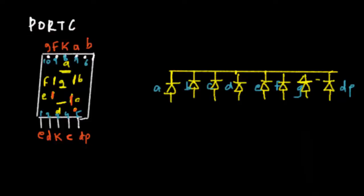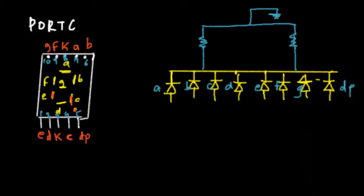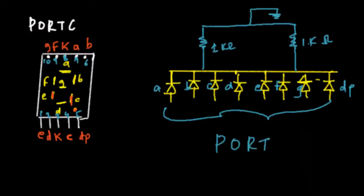For the schematic, we have segments A through G and the decimal point. Pins 3 and 8, the common cathode pins, need to be connected to ground through current-limiting resistors — 1 kilohm resistors will suffice; you can use lower values for brighter output. This ground should be common with your board. The anode side of each segment connects to port C of the controller.